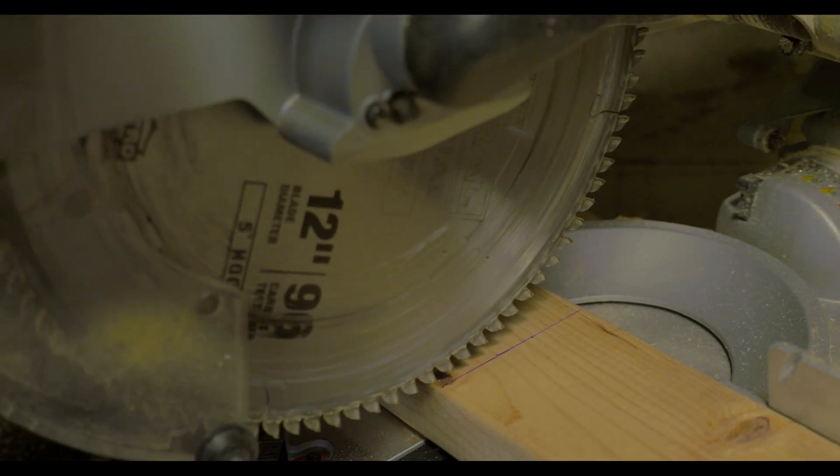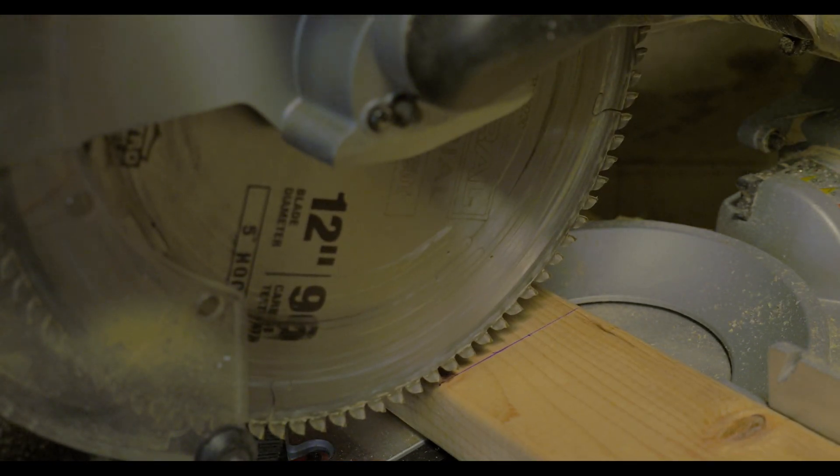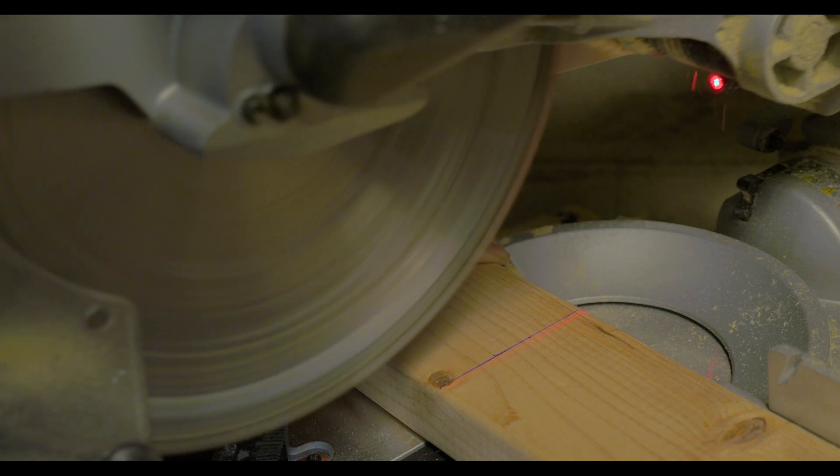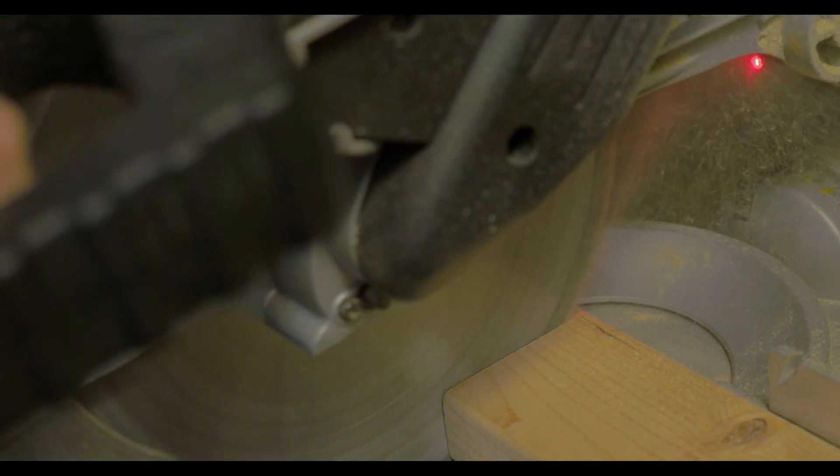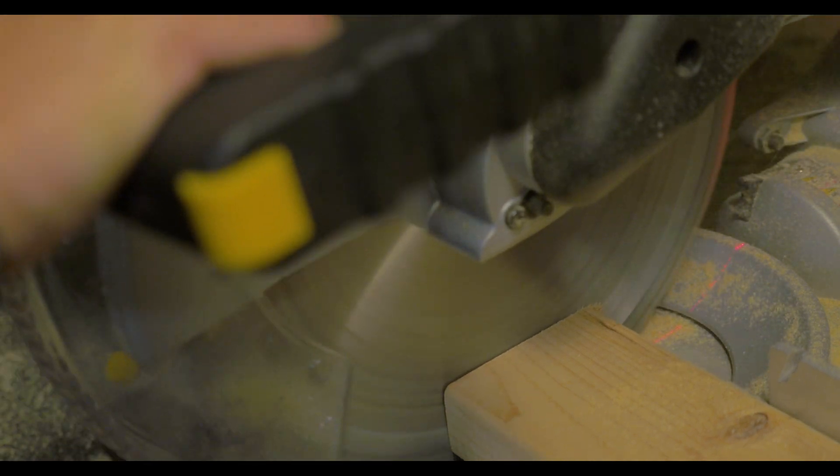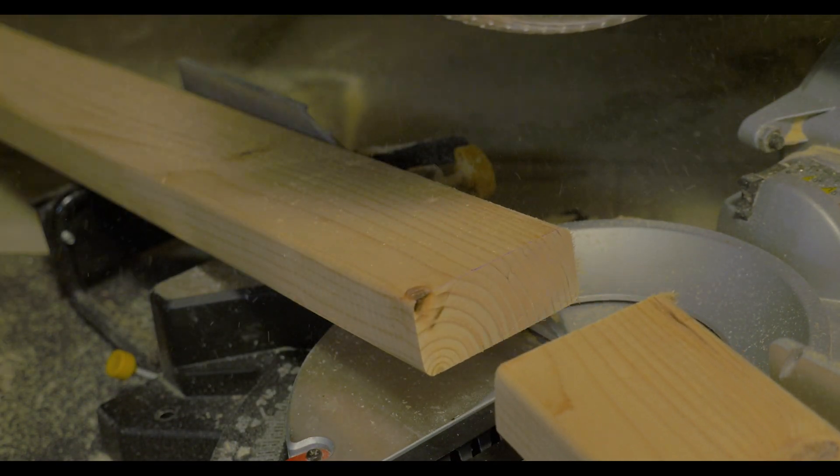For the stand, you're going to need four 2x4s cut at 11-and-a-half inches, and you're going to need two 2-foot-long 2x12 pieces. For the porthole, I used half-inch plywood, which measured 13 inches wide and 28 inches long.